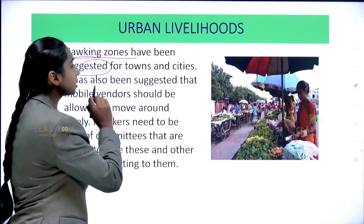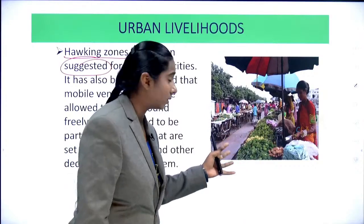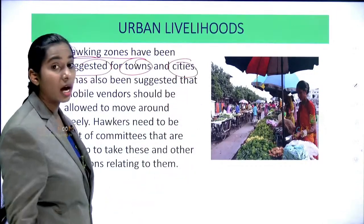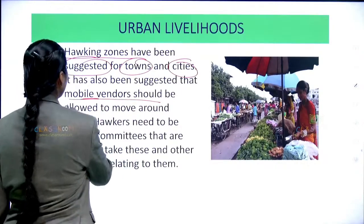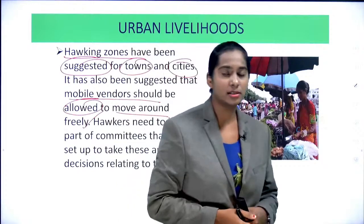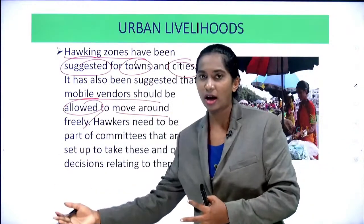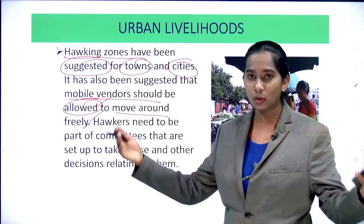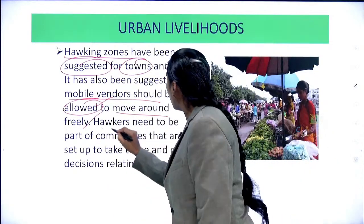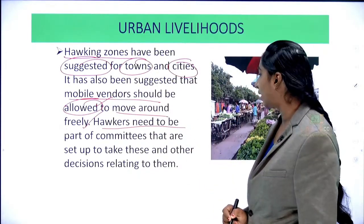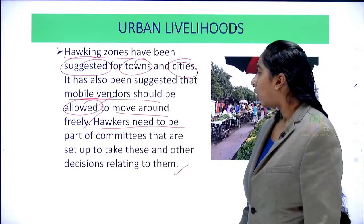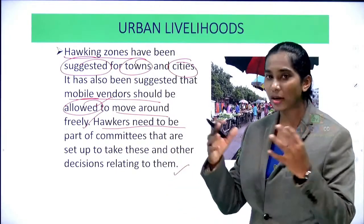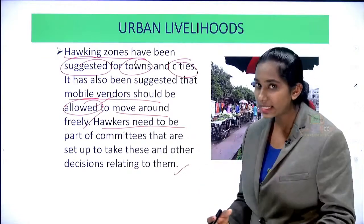Hawking zones have been suggested for towns and cities, and it has been suggested that mobile vendors — those who move from place to place to sell goods — should be allowed to move around freely. Hawkers need to be part of committees set up to take decisions relating to them.